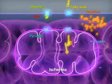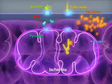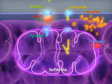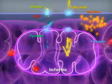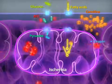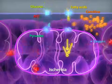In conditions of increased physical activity or insufficient oxygen, the heart's need for oxygen is partially compensated by glucose oxidation.